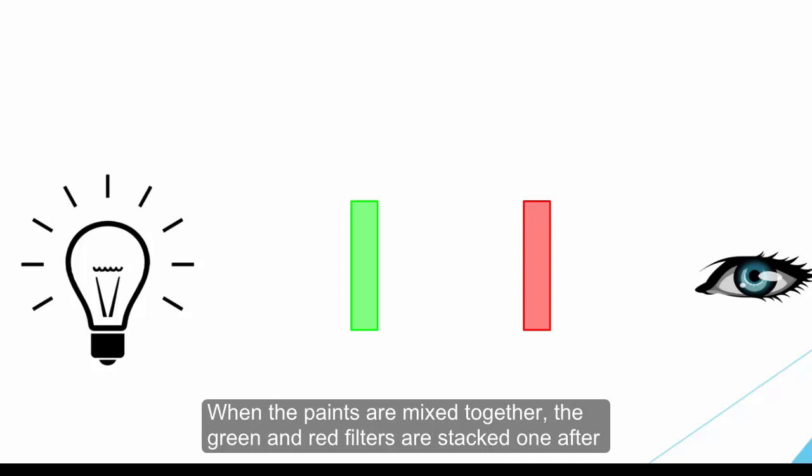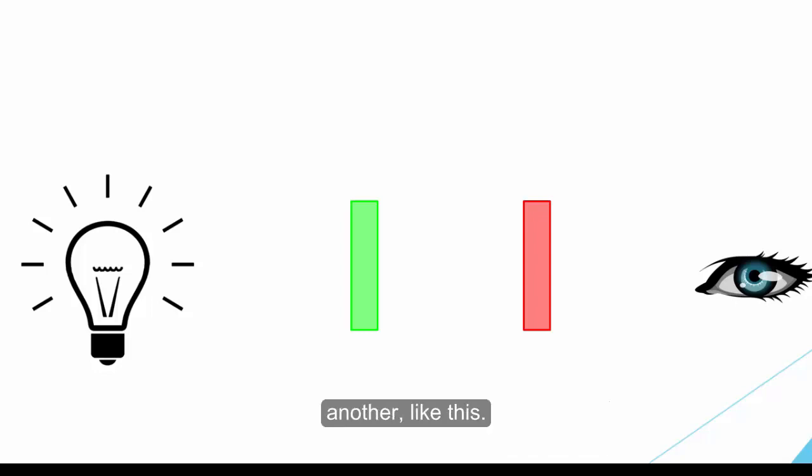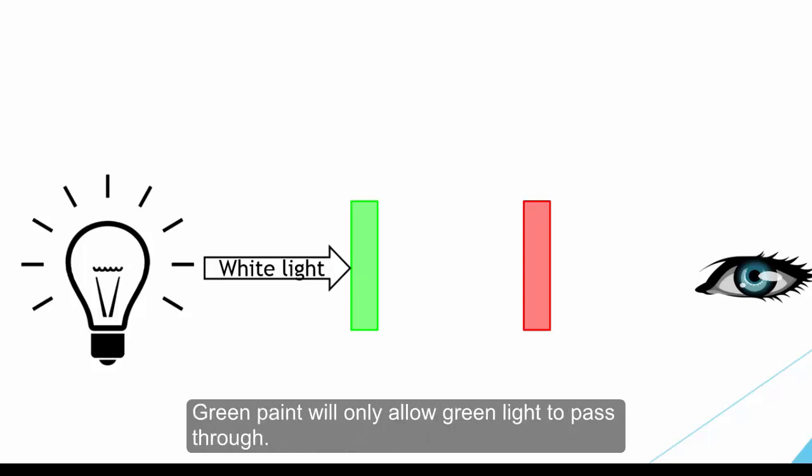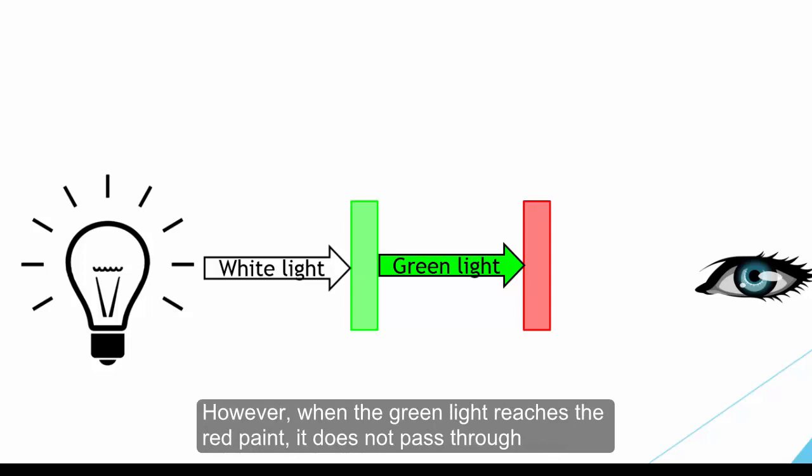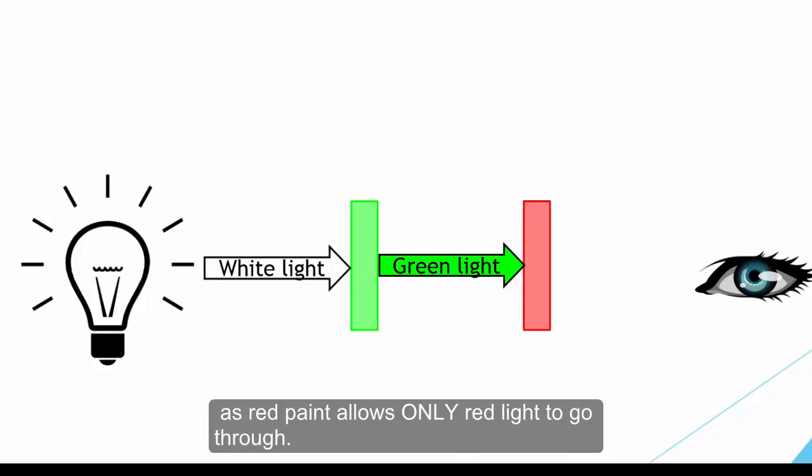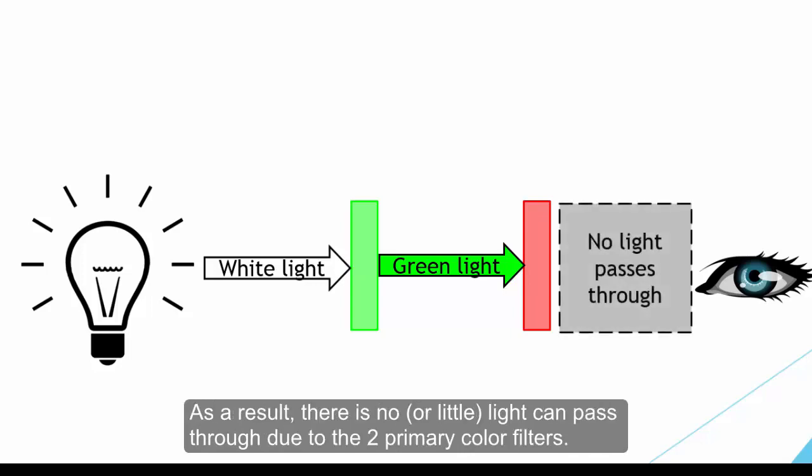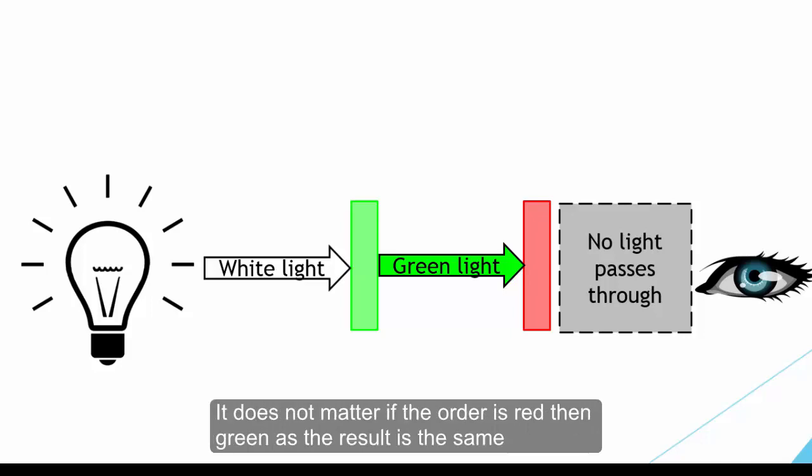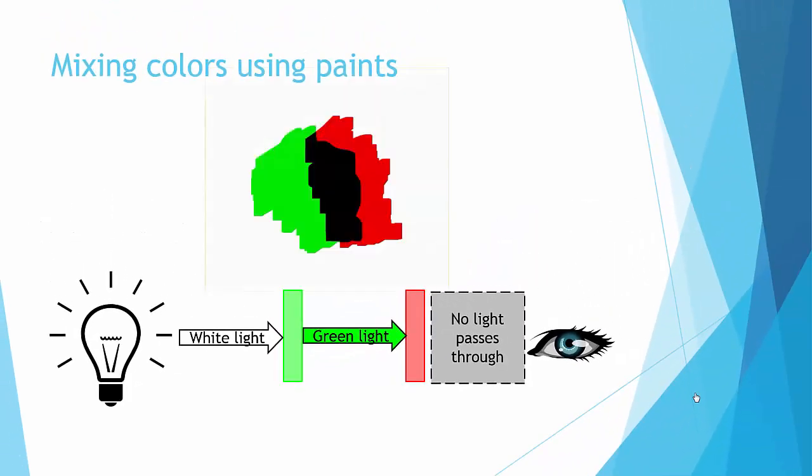Instead, the model looks more like this, and again filter is the key as to how they work. When the paints are mixed together, the green and the red filter are stacked one after another like this. When the white light reaches the mixed paint, it has to go through two filters. The green paint will only allow green light to pass through. However, when the green light reaches the red paint, it doesn't pass through as the red paint only allows red light to go through. As a result, there is no or little light that can pass through due to the two primary color filters. Thus the mixed paint appears to be dull and black to us. And it doesn't matter if the order is red then green, as the result will still be the same. Black is the overlapping color when you mix green with red.